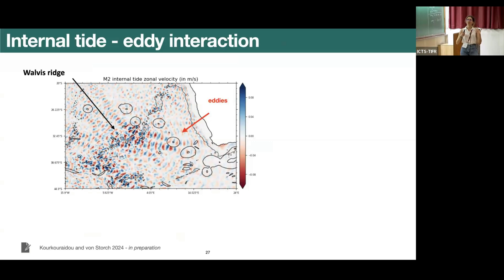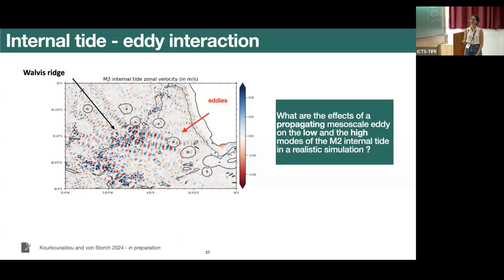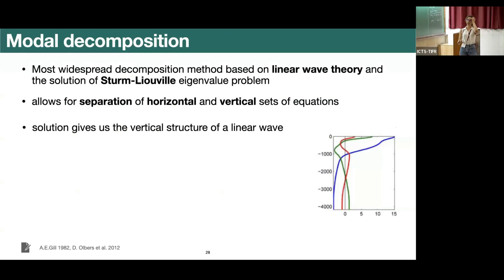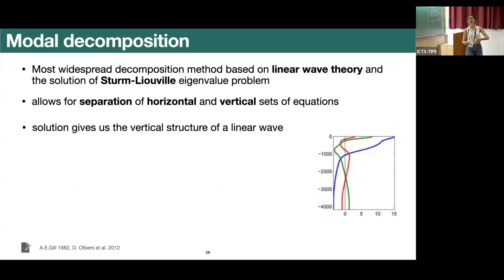Now we want to study what eddies do to the different modes of the internal tide. To do this, we need to decompose the internal tide into low and high modes. This has been done mostly using linear wave theory and the solution of the Sturm-Liouville eigenvalue problem, which allows separation of horizontal and vertical equations. This gives a solution for the vertical structure — for horizontal velocities, mode one has one zero crossing, and the higher the mode the more nodes in the vertical.